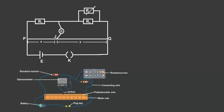How is this experiment meant to go? You'll be expected to set a value for the resistance on the resistance box — for instance, you may be asked to make it 10 ohms by removing a plug of 10 ohms. Once you've done that, you'll be asked to adjust or move this jockey along the potentiometer wire until the reading on the galvanometer is zero.